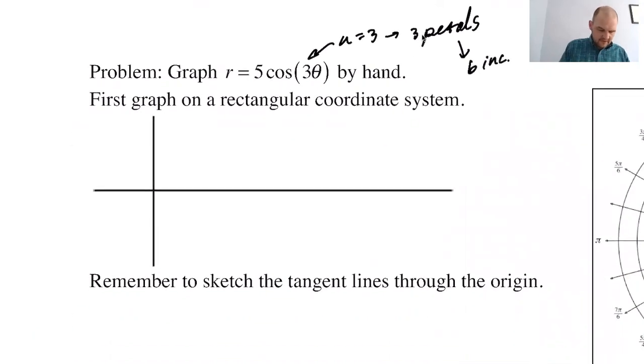So the period is 2 pi over 3. The increment is going to be 2 pi over 12, which is pi over 6. So I need 6 of them. I know I'm going to need to go to pi. So that's actually useful information.